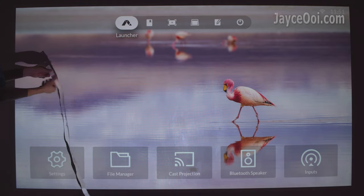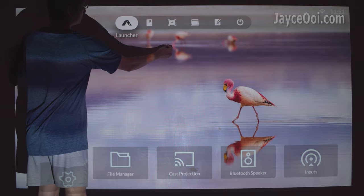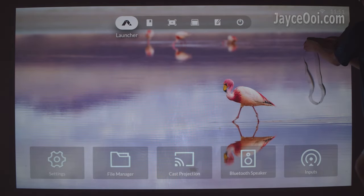Alright, let's calculate the projection screen size now. Personally, I like to project it at 100 inches. So it has width of 2.21m and height of 1.24m.